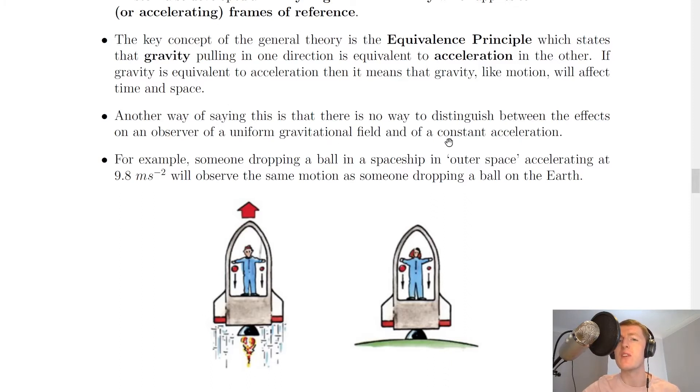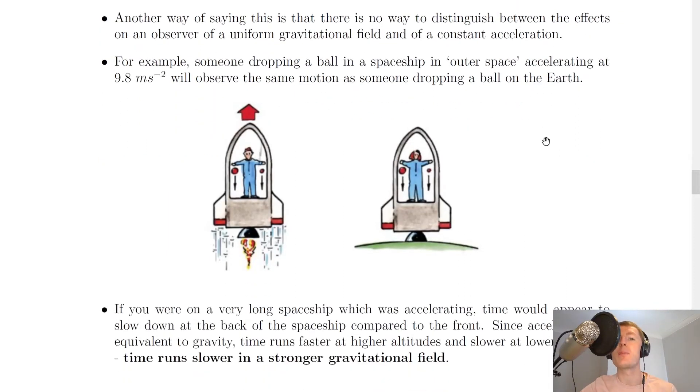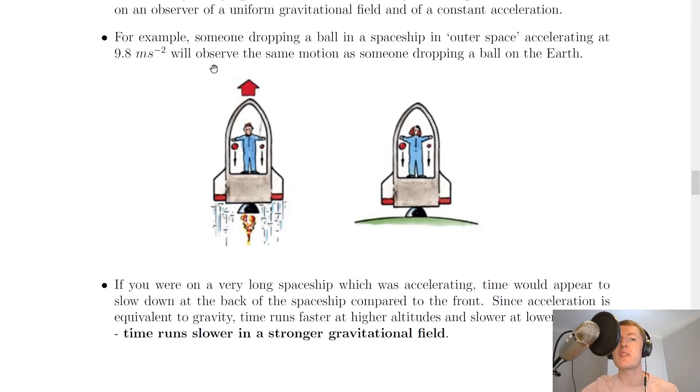Another way of saying this is that there is no way to distinguish between the effects on an observer of a uniform gravitational field and of a constant acceleration. So just like our thought experiment there, there's an example here that says, for example, someone dropping a ball in a spaceship in outer space, accelerating at 9.8 meters per second squared, as in this case, will observe the same motion as someone dropping a ball on the Earth.